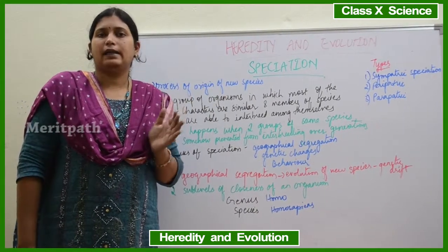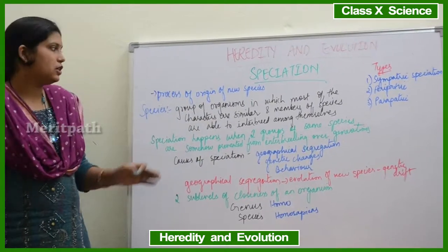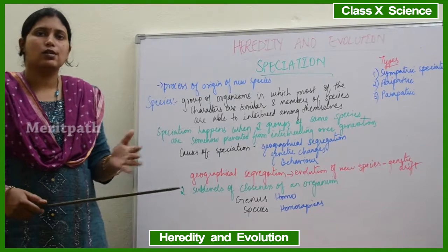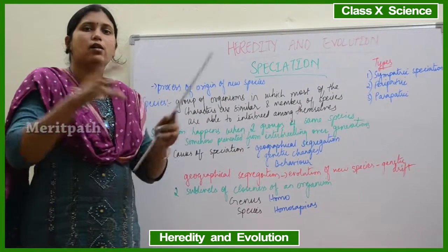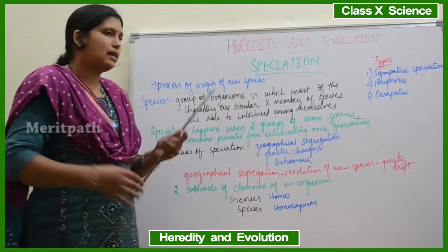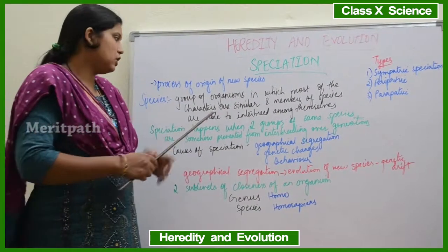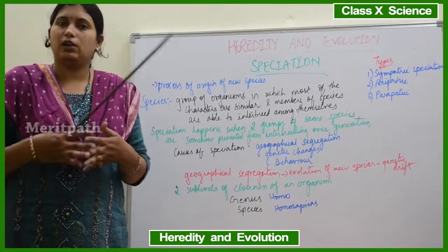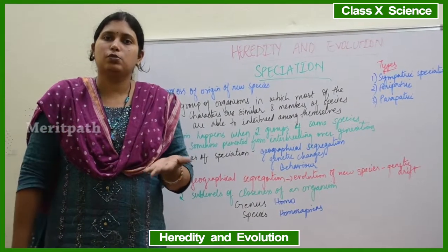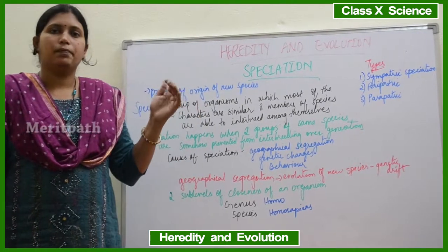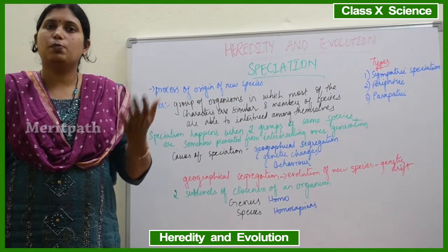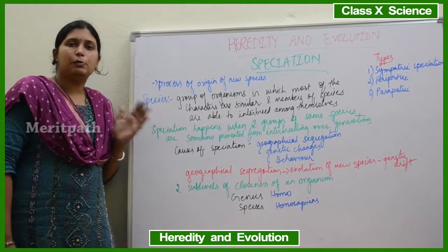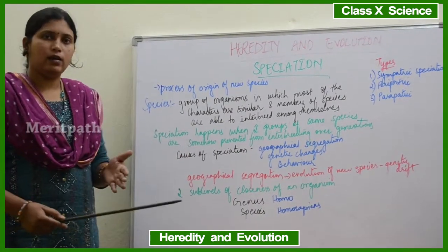The next topic in the chapter Heredity and Evolution is speciation. Speciation is always the process of origin of a new species. Species means a group of organisms which are mostly similar in characters, and the members of the species are able to interbreed among themselves — they can mate with each other and produce new offspring. It is also important that the newly produced offspring should be a fertile offspring.